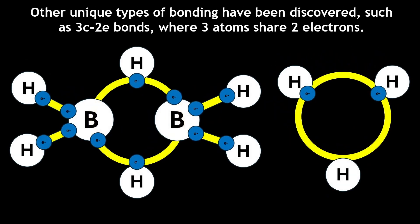Other unique types of bonding have been discovered, such as 3C2E bonds, where three atoms share two electrons. This is due to the movement of electrons between bonds, which hold the compounds together. Check out my video on 3C2E bonds for a more in-depth explanation.